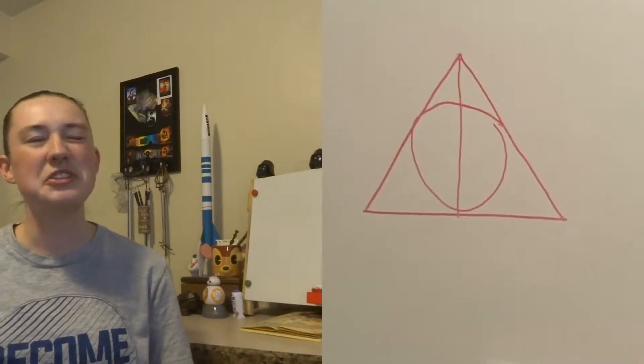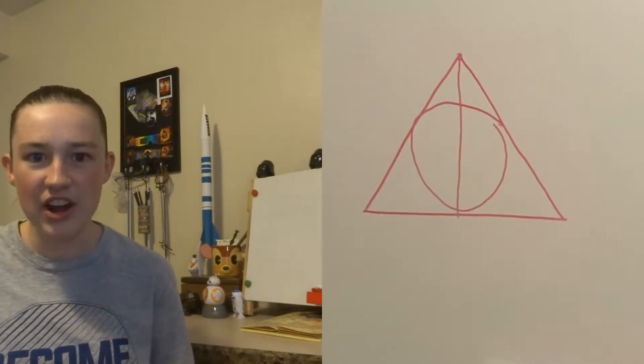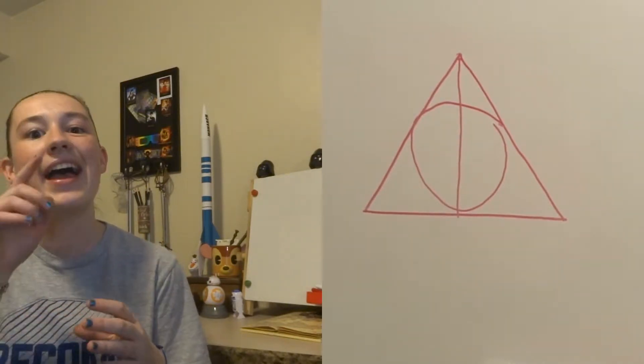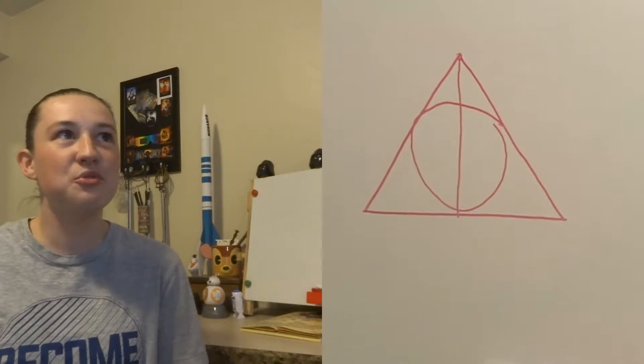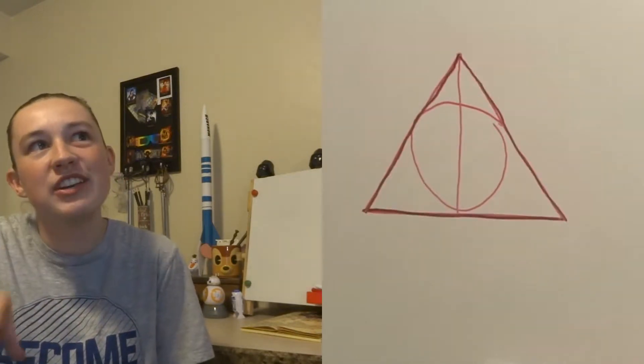If you didn't know about Desmos, it's a free online graphing calculator. The Deathly Hallows symbol is pretty easy to graph because it's just an equilateral triangle with a circle in it and a line segment. Plus, if you think about it, a triangle is just three line segments. So we really just have to graph four lines and a circle.